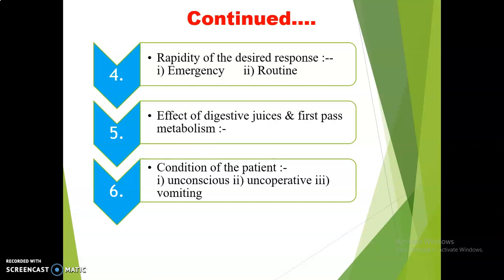The next factor in selection of the route of drug administration is the condition of the patient — this is a patient-related factor. In the case of an unconscious patient, we cannot give the drug by oral route. Similarly, in the case of an uncooperative patient, such as a psychologically ill patient, they may not cooperate in taking the drug orally, so the parenteral route is preferred. Another patient-related condition is vomiting — if a patient is suffering from vomiting or diarrhea, giving the drug by oral route is of no use, as the drug may be expelled. So such drugs are again given by the parenteral route.